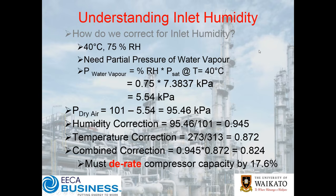Correcting for inlet humidity — here's another example. If we have 40 degrees, 75% RH. We've seen this on a number of sites where the compressors haven't been thought out too carefully as to where they were placed. If you run through those calculations, you'll notice that as our temperature increases, the saturation pressure of the water vapour goes up significantly, and you end up with 5.5 kPa.